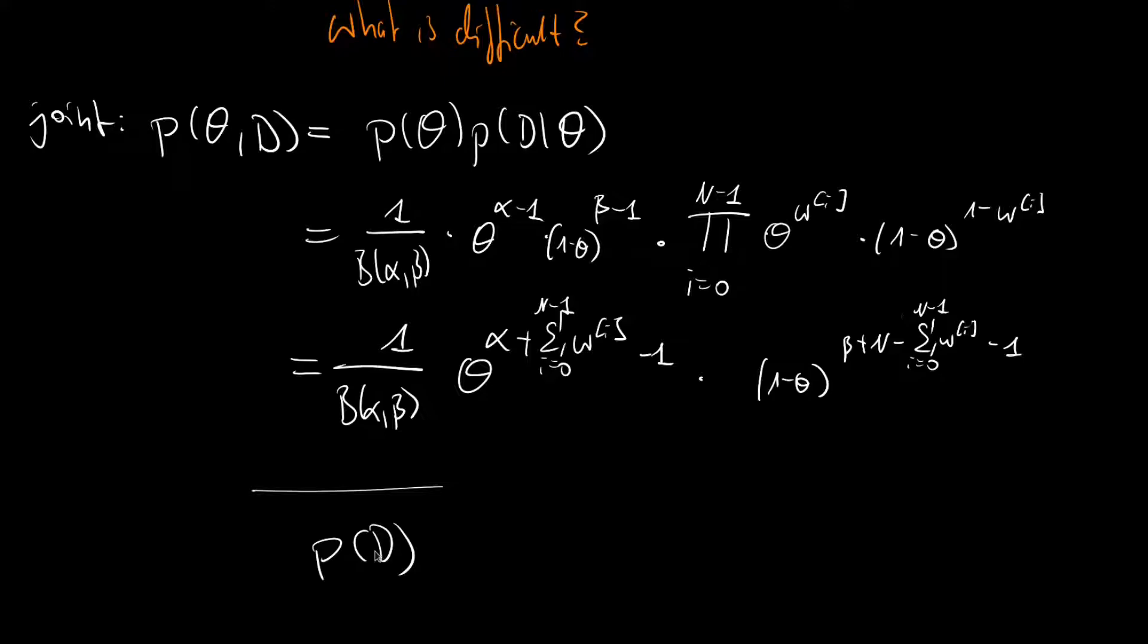But this is only the case if we have purely observable nodes. And in our case, recall, the theta was latent. And in order to find this P of D, we have to remove the theta from the joint.